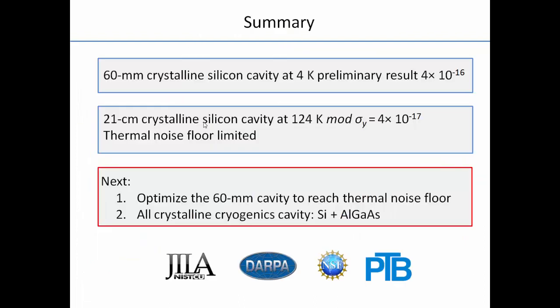In summary, for the 60 mm cavity, our preliminary result at 4 Kelvin is 10⁻¹⁶. For the 21 cm cavity at 124 Kelvin, we are already limited by the thermal noise floor at 10⁻¹⁷. The next steps are to optimize the 60 mm cavity performance to reach the thermal noise floor, and based on recent great progress with crystalline coatings — we already have a 300 K mirror at 1.5 μm — we are working to use those coatings at cryogenic temperature to form a fully crystalline cavity with a thermal noise floor of 10⁻¹⁷.